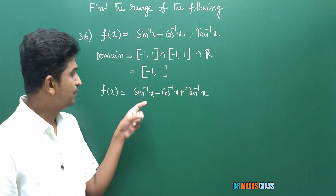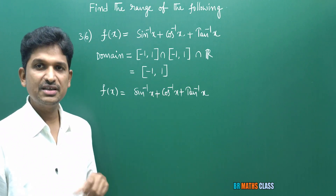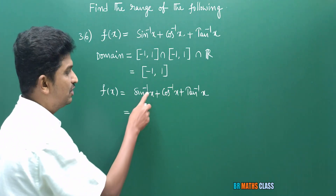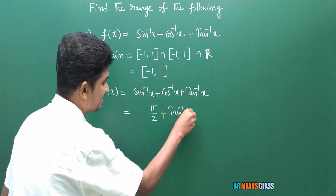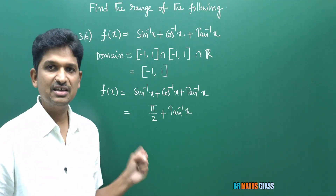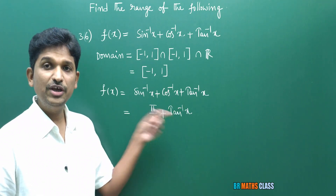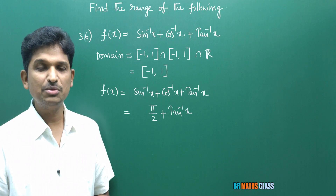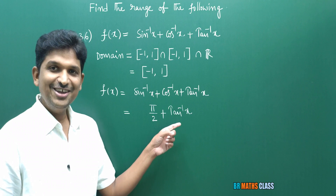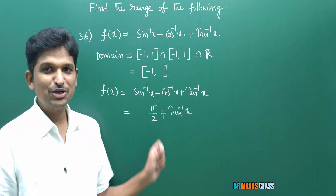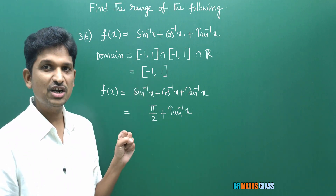Now I need to calculate the range of sin⁻¹x + cos⁻¹x + tan⁻¹x. Using the property sin⁻¹x + cos⁻¹x = π/2, the function simplifies to f(x) = π/2 + tan⁻¹x. The domain of the function is the closed interval [−1, 1], not all real numbers.